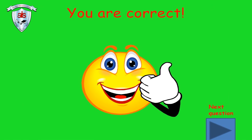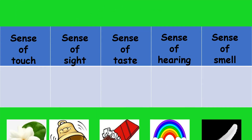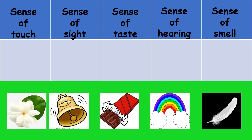Wonderful, you're doing great! Now it's reflection time with some tricky questions. We have a matching table with: sense of touch, sense of sight, sense of taste, sense of hearing, and sense of smell. Below are pictures of a flower, a bell, a chocolate, a rainbow, and a quill — a feather. We have to match each picture with the appropriate sense.